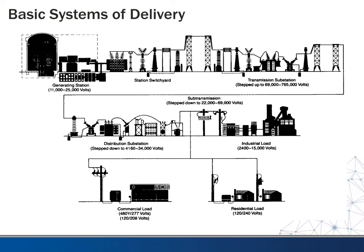Looking at the system as a whole: we have our generation station where power is generated, generally in the range of 11,000 to 25,000 volts. We come out to a switch yard where voltage is stepped up, reaching the transmission substation at 69 to 765,000 volts. It's then transmitted long distances until it reaches local distribution, where it's stepped down to 4.16 to 34kV. At that point, industrial loads may receive distribution voltage directly with their own substations, while others receive the voltages we're accustomed to — 480V or 120/208V — and residential gets 120/240V.